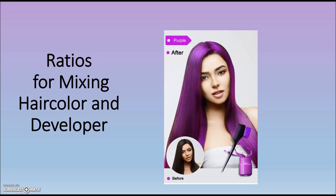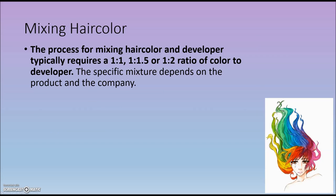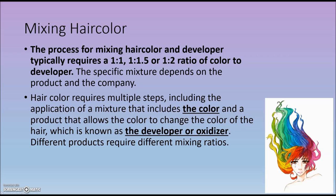In this video, we're going to take a look at ratios with applications from cosmetology. The process of mixing hair color and developer typically requires a 1 to 1, a 1 to 1 and a half, or a 1 to 2 ratio of color to developer. Hair color requires multiple steps including the application of a mixture that includes the color and a product that allows the color to change the color of the hair, which is known as the developer or oxidizer.